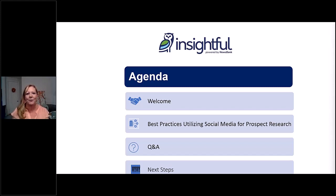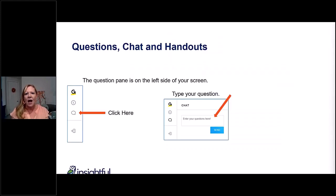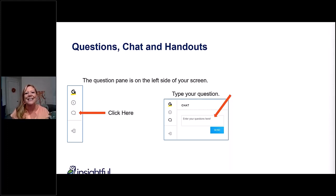On our agenda today, I'll quickly share a bit of background information on Insightful, then we'll jump right into the program with the top social media strategies for prospect researching. We'll have a few next steps, and we'll be happy to take your questions. Jacob will pause throughout the presentation. You'll likely see icons on the left side of your screen — there are four or five of them — where you can type in questions or download the handouts. We'll do our best to get to all the questions, and if we run short on time, we commit to getting back to you soon.